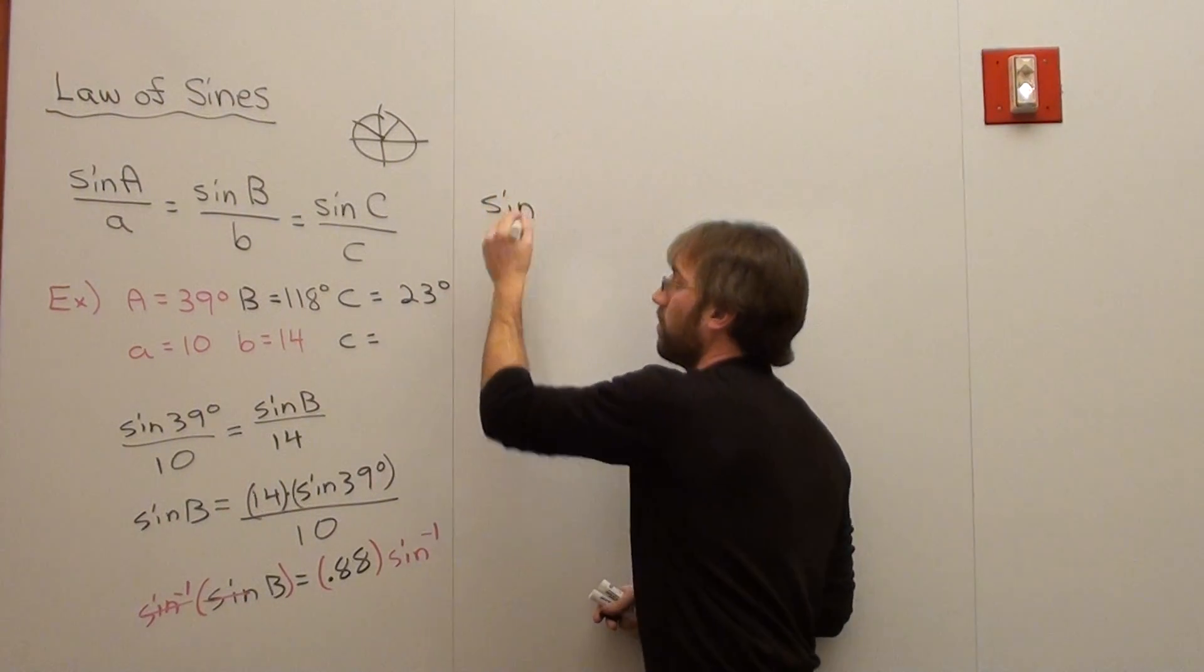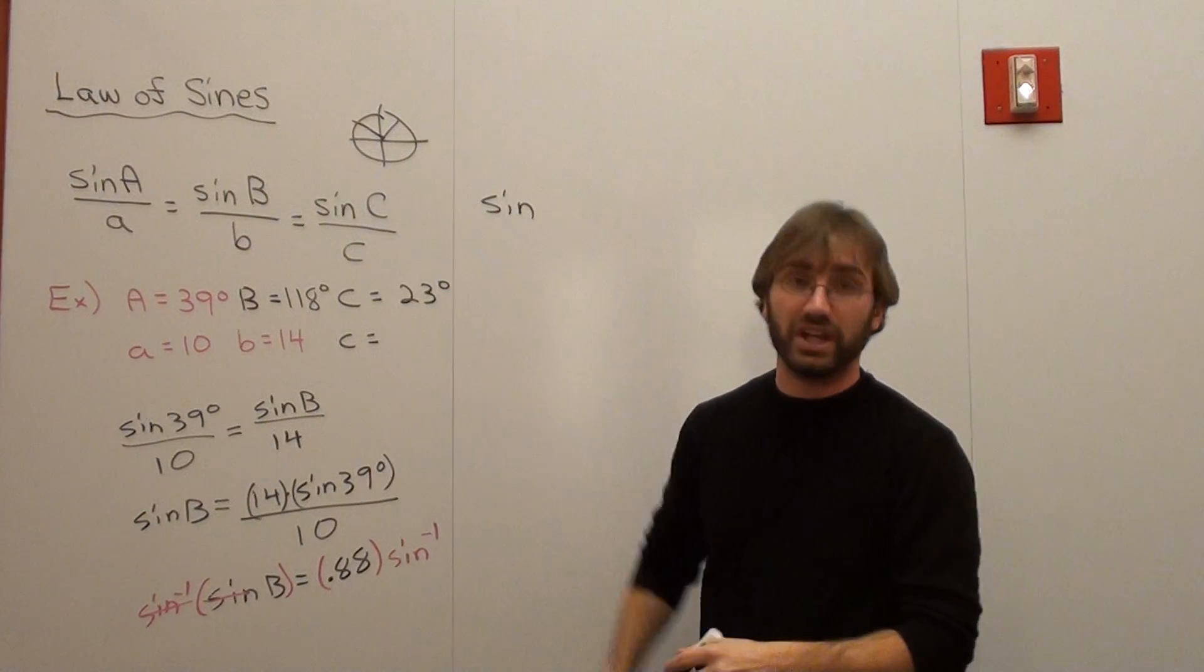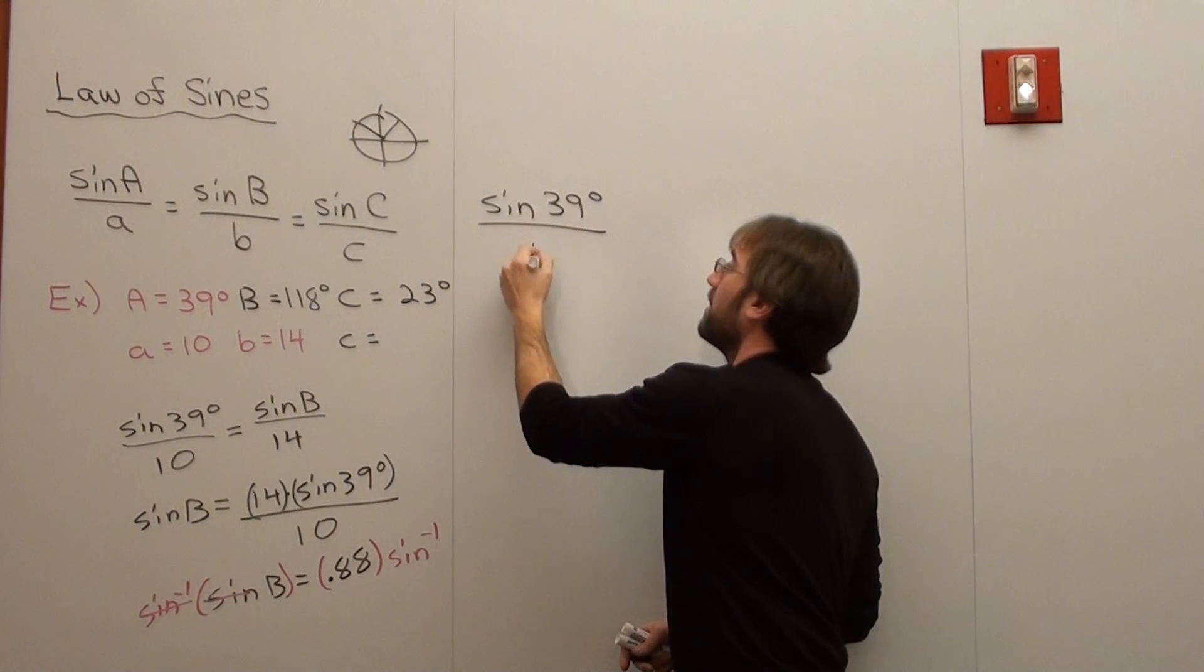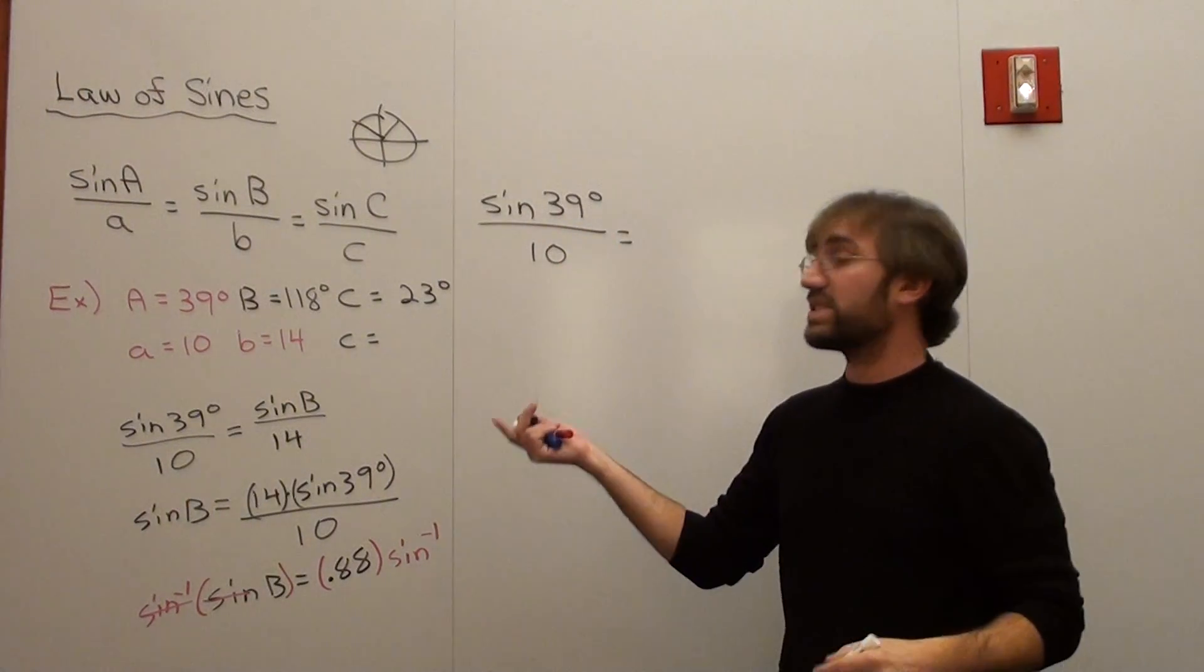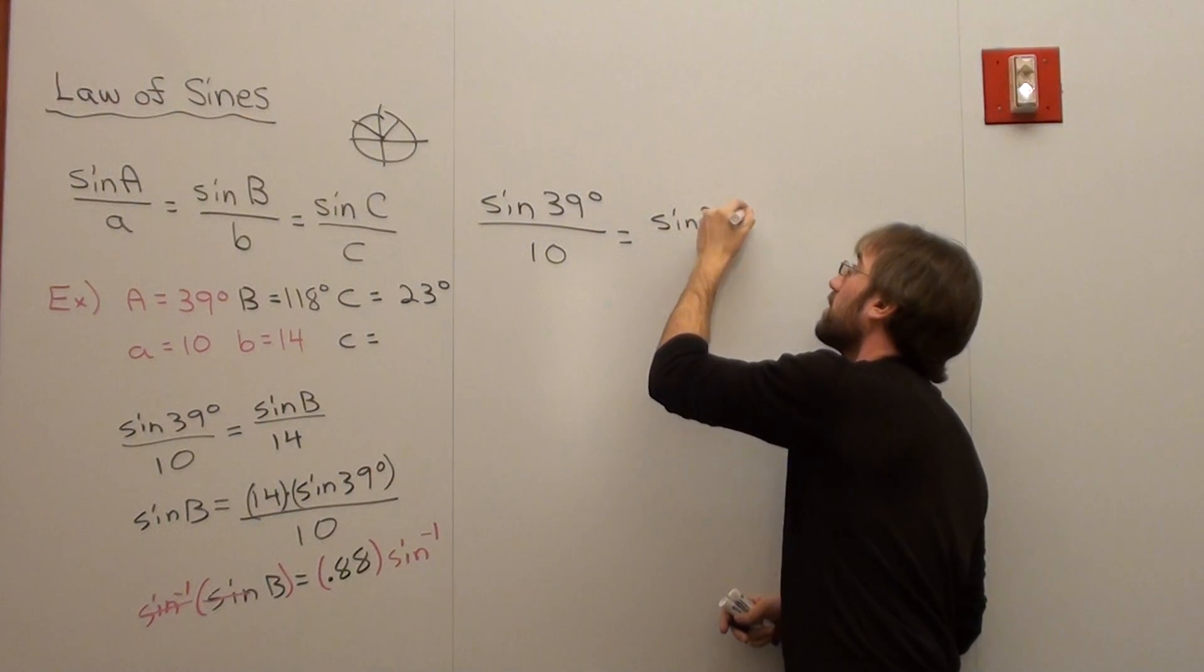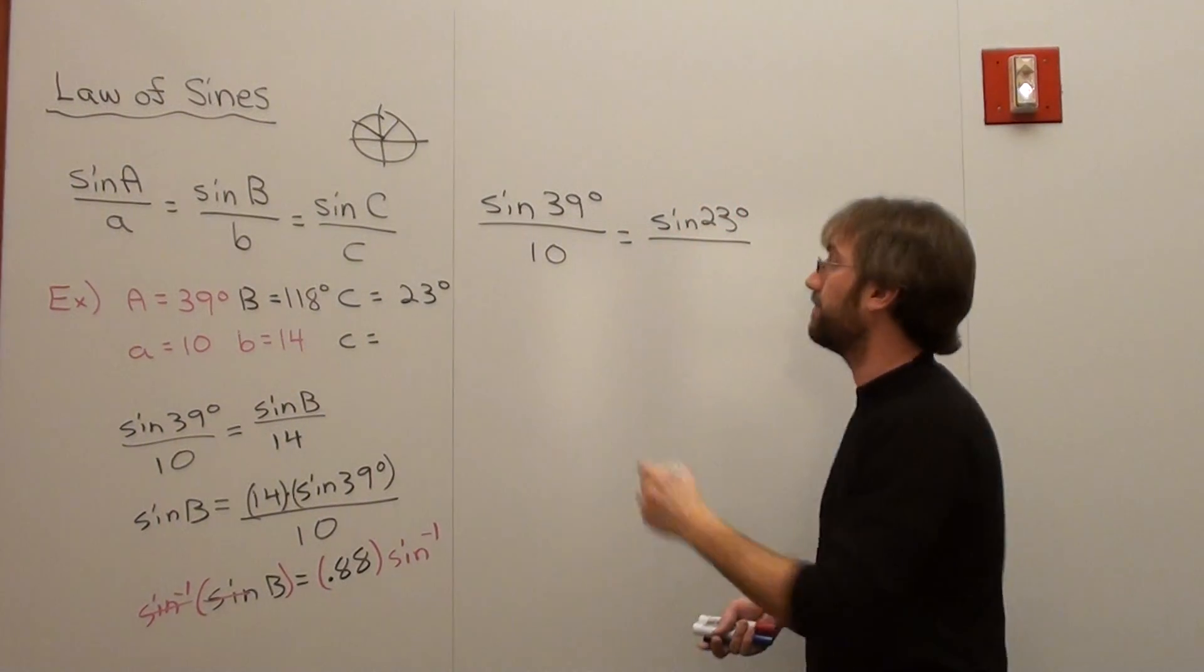So sine of A, which is 39 degrees, over my A value, which is 10, equals the sine of C, which is 23 degrees, over C, which I don't know.